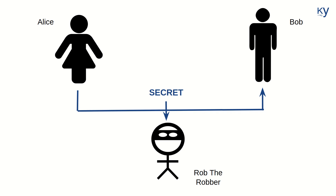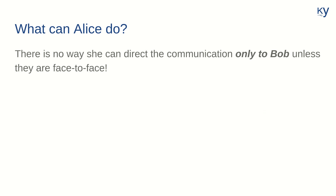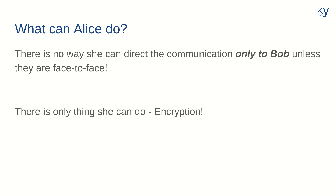So how do you prevent this? What can Alice do to make sure that only Bob sees the message? Well, first of all, you have to appreciate that unless Bob is in the same room as Alice, there is no way she can ensure that the communication only reaches him. As long as it is on the internet or even a text message, it is going to fly all over the world and anywhere Rob could sit and try to hack and read that message. So the only thing she can do is to encrypt the message.